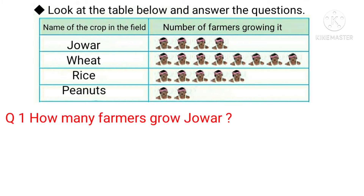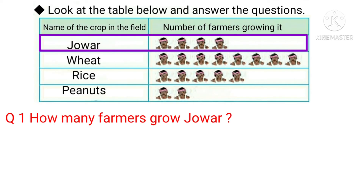How many farmers grow jowar? Here is the jowar column. If we look in this column, we can see 1, 2, 3 and 4 — so 4 farmers grow jowar in their farms. The answer is 4.